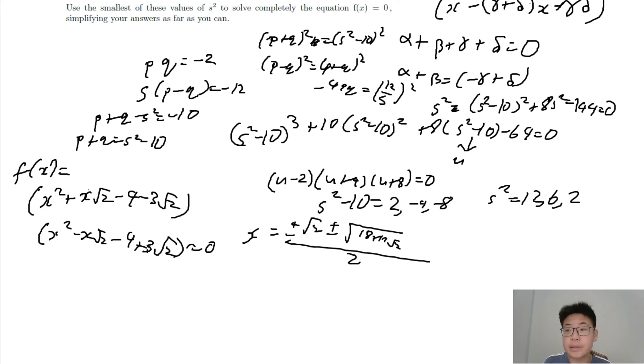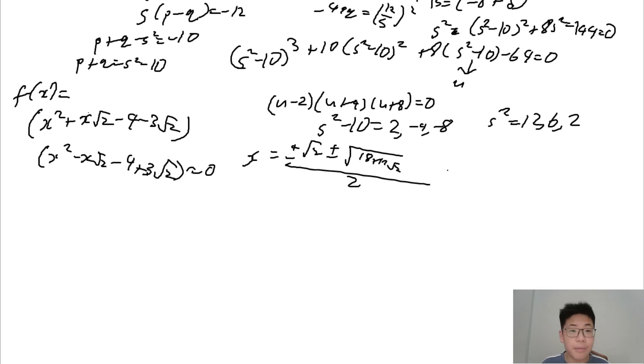Right, so the question is to simplify as much as possible. We would have, since 18 + 12√2 is just (3 + 2√2)² in disguise. So you have (±√2 ± √6√2 ± 1)/2.